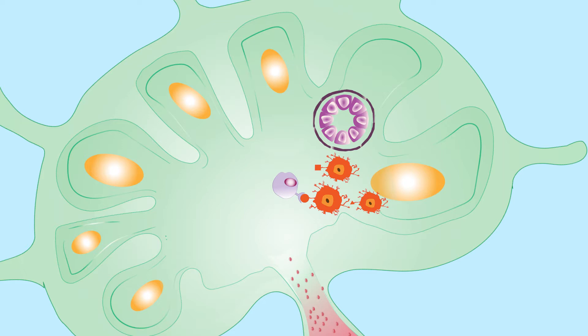Without the S1P receptor, the activated T cell is not responsive to the S1P gradient and is temporarily trapped within the lymph node.